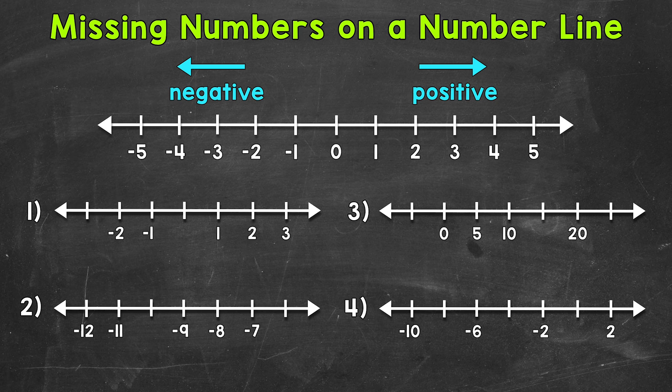Now remember, to the right of zero we have positive numbers, and to the left of zero we have negative numbers. Another thing I want to mention before getting into our examples is that when we move to the right on a number line, we increase in value, and when we move to the left on a number line, we decrease in value. So keep that in mind.